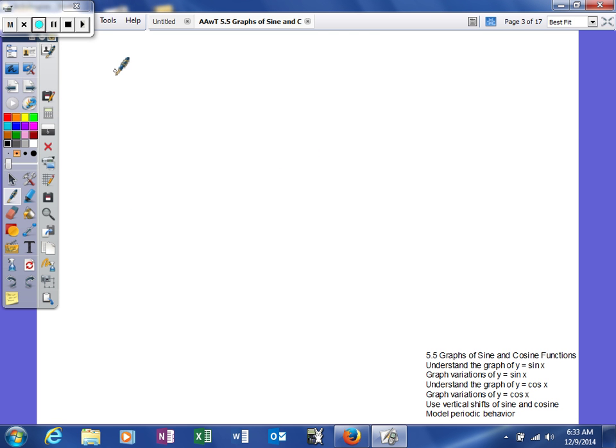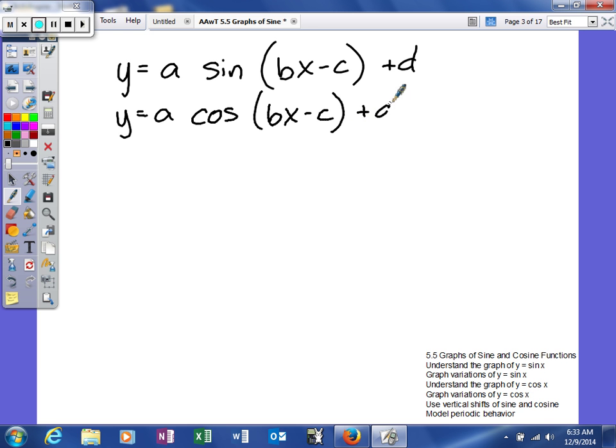For starters, we're going to write down basically the general function for each of these. And this isn't the first time we've looked at something like this. Let's write cosine down. So those are basically the two general forms of the sine and cosine graph. We know kind of what a, b, c, and d already do to our graph. We're going to look at basically how that applies to the graphs we're about to talk about.